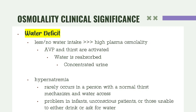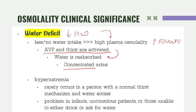For water deficit — low water — plasma osmolality is high. ABP and thirst mechanism are activated; there is reabsorption, so urine is concentrated since less water is released and water is returned to the body. Hypernatremia rarely occurs as long as you have a normal thirst mechanism and access to water. It is commonly observed in infants — who cannot ask for water — and unconscious patients.